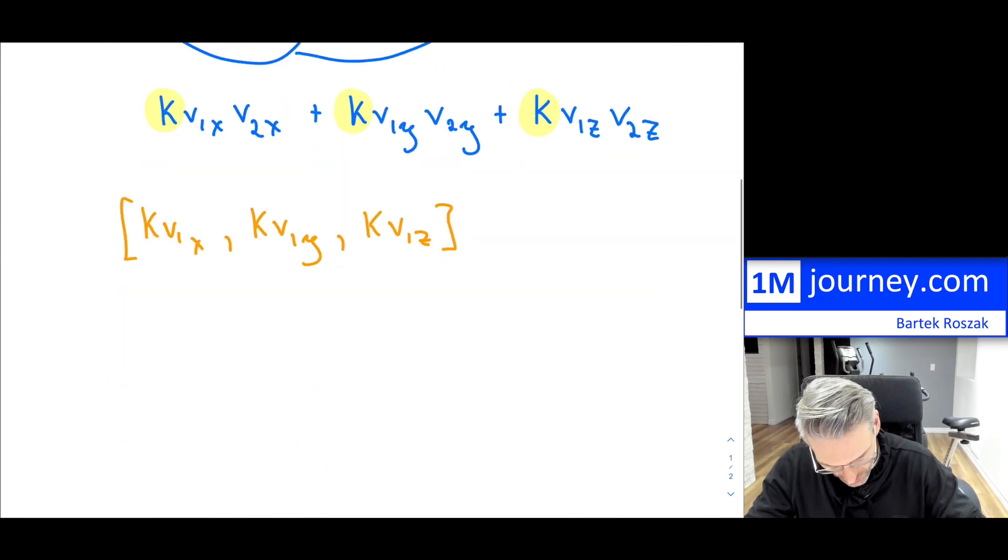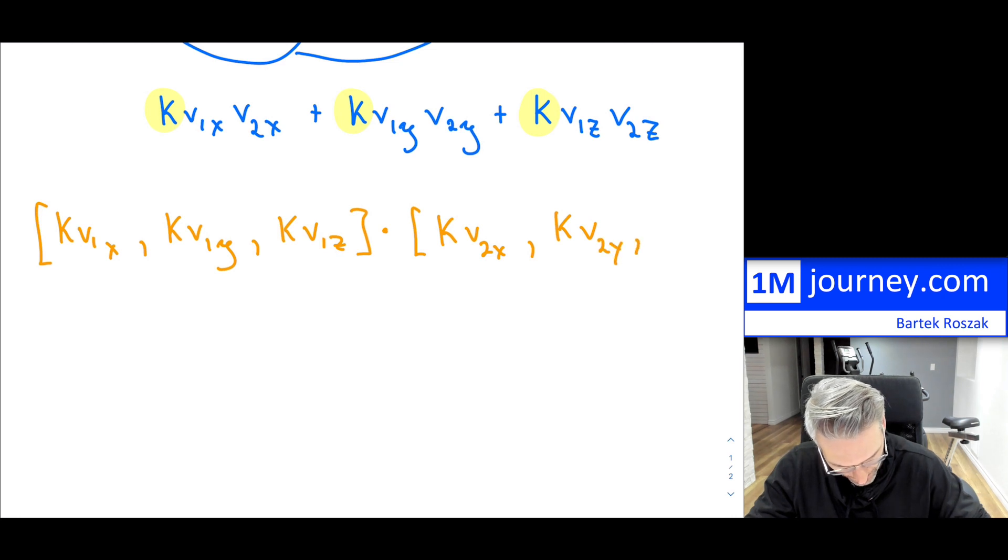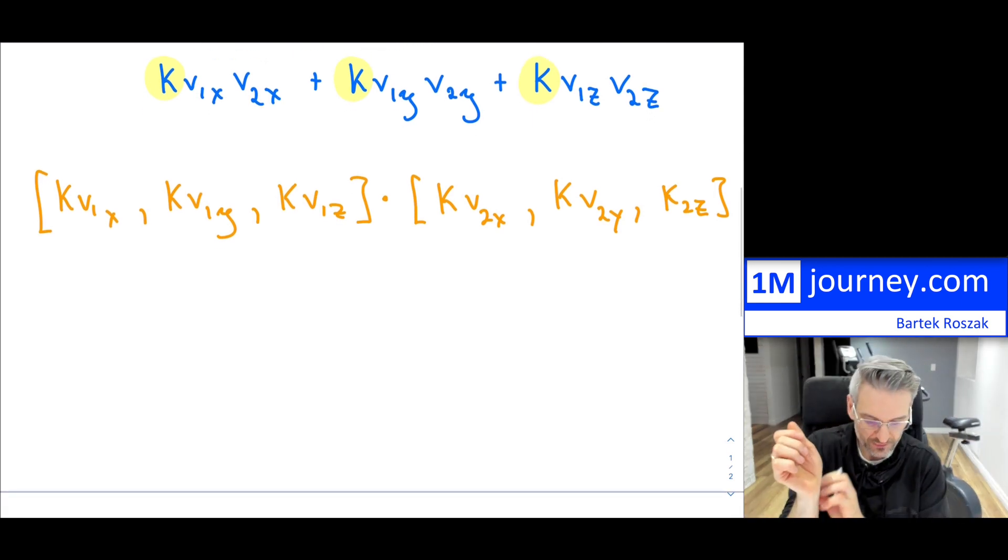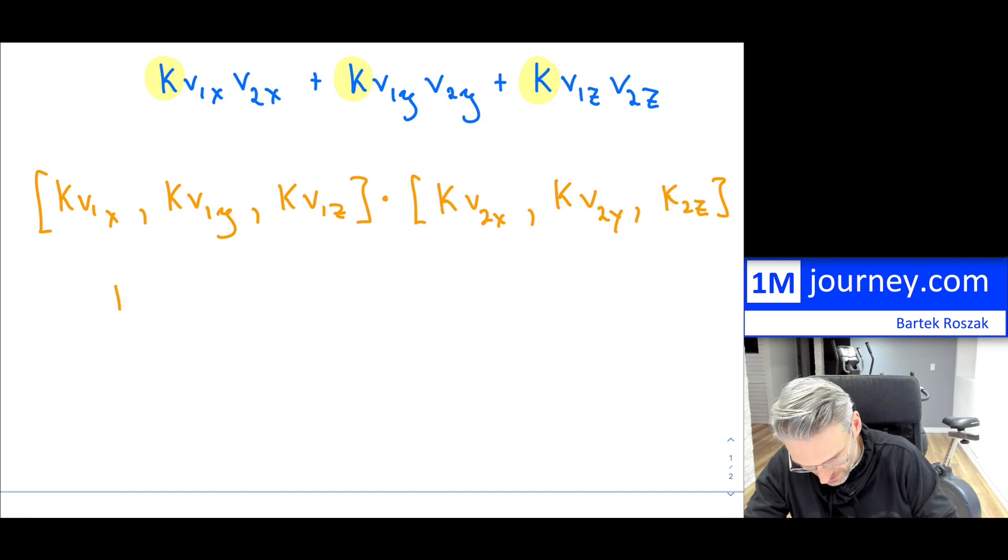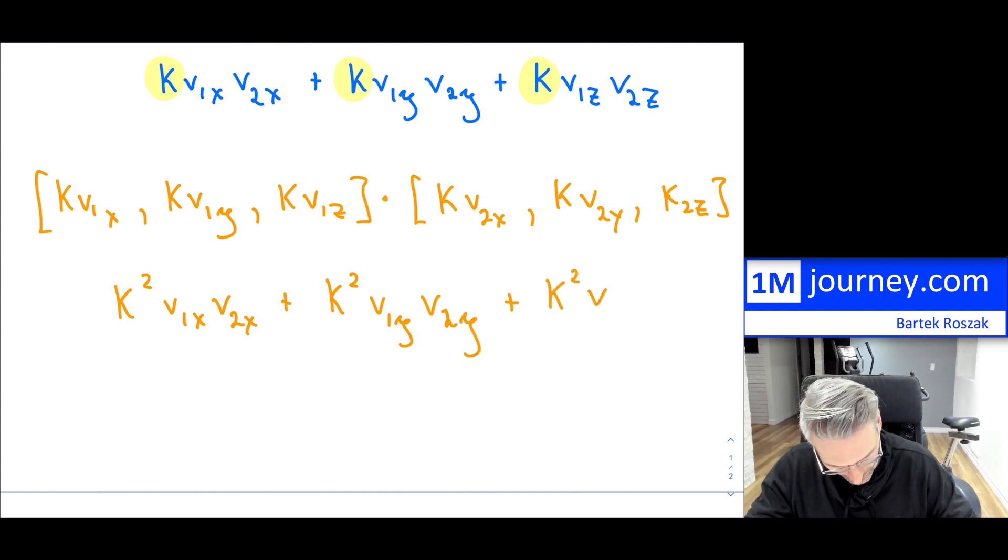So this is going to be K. This is going to be V2X, K V2Y, and K V2Z. And there you go. So now if you take the dot product, you'll notice that this is going to be now K squared V1X V2X, plus K squared V1Y V2Y, plus K squared V1Z and V2Z.